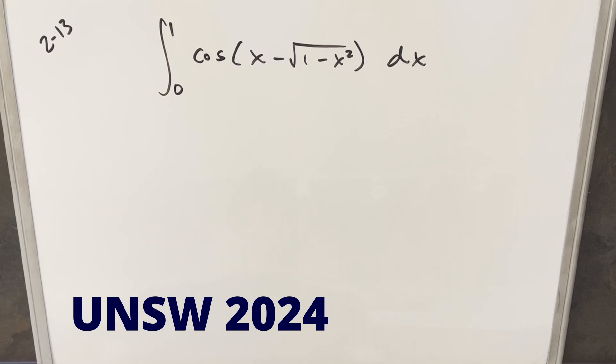We have the integral from 0 to 1 of cosine x minus square root of 1 minus x squared dx.